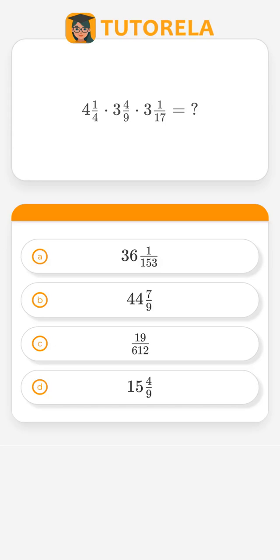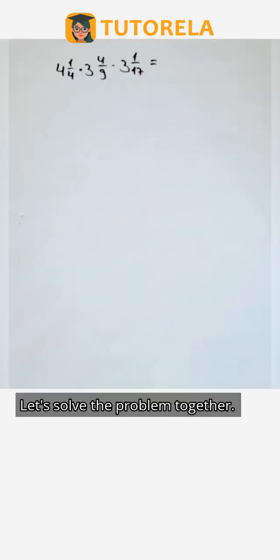What is the result of the expression? 4 and 1 quarter, multiplied by 3 and 4 ninths, multiplied by 3 and 1 seventeenth. Let's solve the problem together.